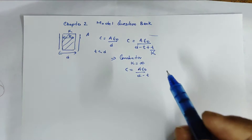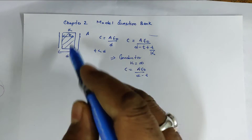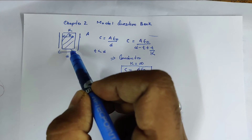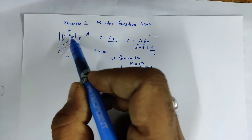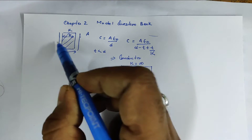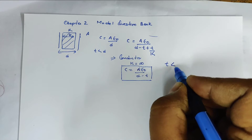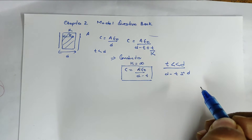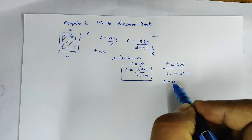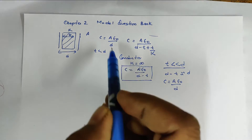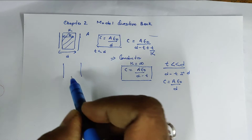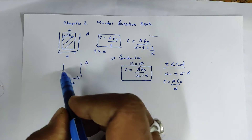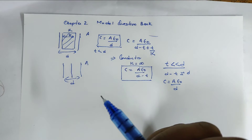In this case, the conductor has the same thickness T. This is a parallel plate capacitor system. Now, if the conductor has a very small thickness T — it is a thin plate — then D minus T is approximately equal to D. So the capacitance becomes Aε₀/D, which is the same as the original parallel plate capacitor with plate separation D.